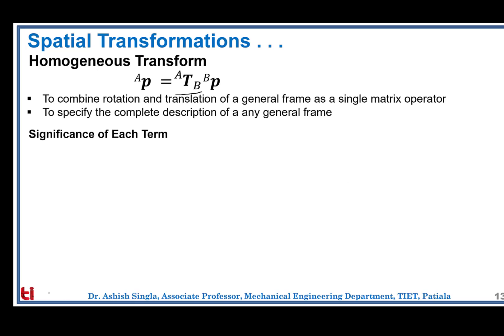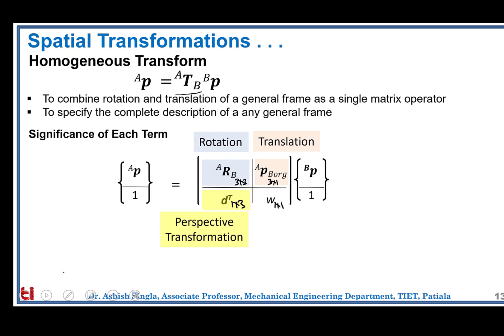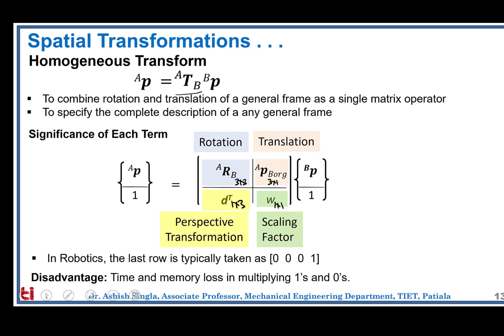The significance of each term in the homogeneous transform: the first 3×3 matrix represents the rotation of frame B with respect to frame A. The 3×1 vector represents the translation of the origin of frame B with respect to frame A. The 1×3 row vector D-transpose represents the perspective transformation, typically used in computer graphics. The scalar W (1×1) is the scaling factor, also used in computer animations. From the robotics point of view, the last row is typically taken as [0, 0, 0, 1]. A disadvantage of the homogeneous transform is time and memory overhead due to multiplication of added ones and zeros.